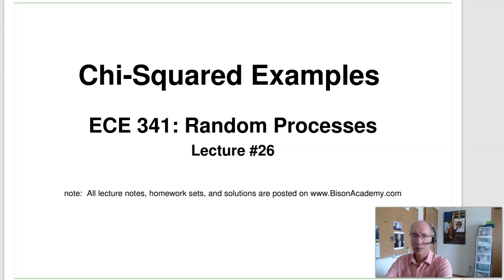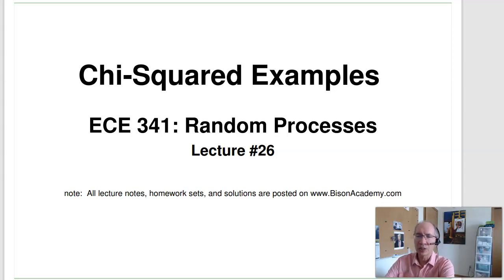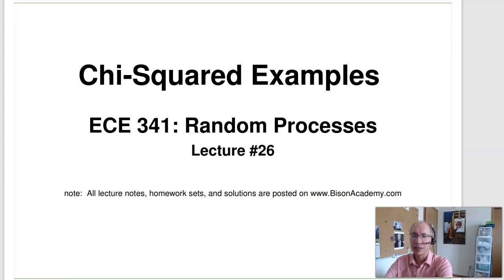Welcome to lecture number 26 for ECE 341 Random Processes. In our last lecture, we looked at the chi-squared test — a test of a distribution. With it, I can determine whether a die is loaded or fair, determine whether somebody fudged the data, and determine how much I can fudge the data or load a die and get away with it.